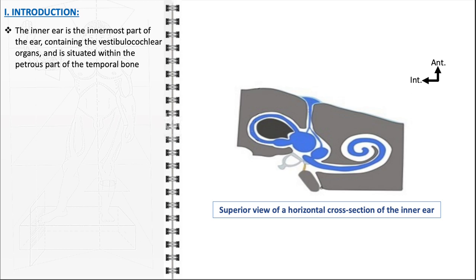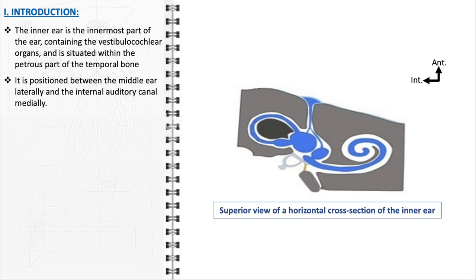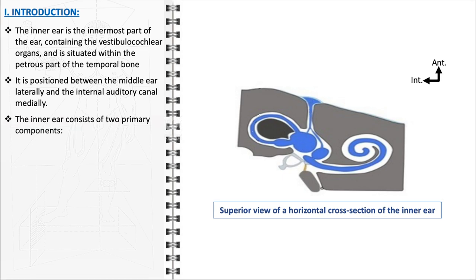The inner ear, an intricate and essential component of the auditory and vestibular systems, is the innermost part of the ear. Encased within the dense petrous part of the temporal bone, it plays a crucial role in both hearing and balance. Situated strategically between the middle ear laterally and the internal auditory canal medially, the inner ear is well-protected yet perfectly positioned to perform its functions. The architecture of the inner ear is divided into two primary components: the bony labyrinth and the membranous labyrinth.